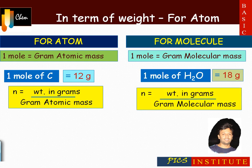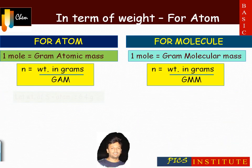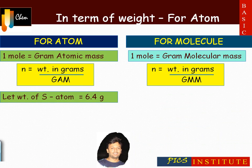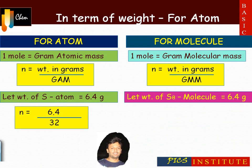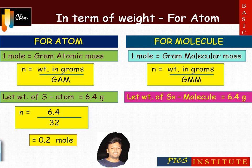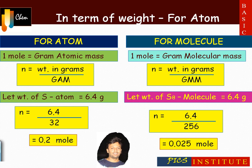The formula is: number of moles equals weight in grams divided by gram atomic mass (for atoms), or weight in grams divided by gram molecular mass (for molecules). For example, if the weight of a sulfur atom is 6.4 grams, we find moles using 6.4 divided by the atomic mass of sulfur. For the S₈ molecule, the formula is weight divided by molecular mass, that is 256.